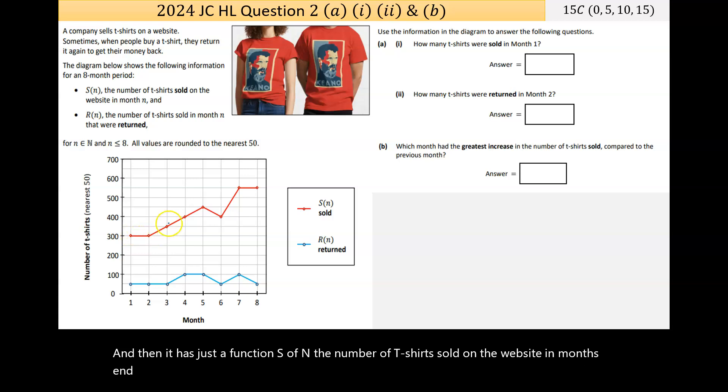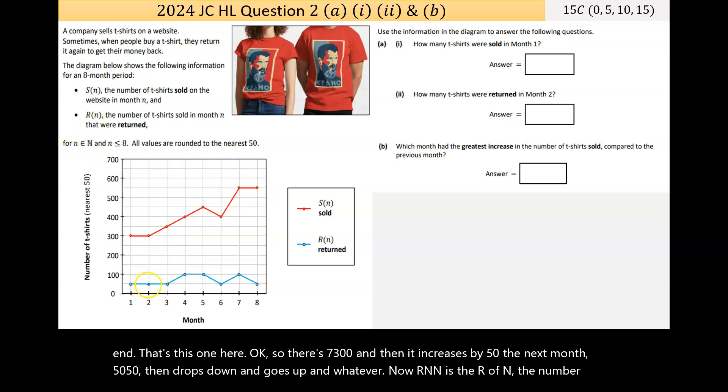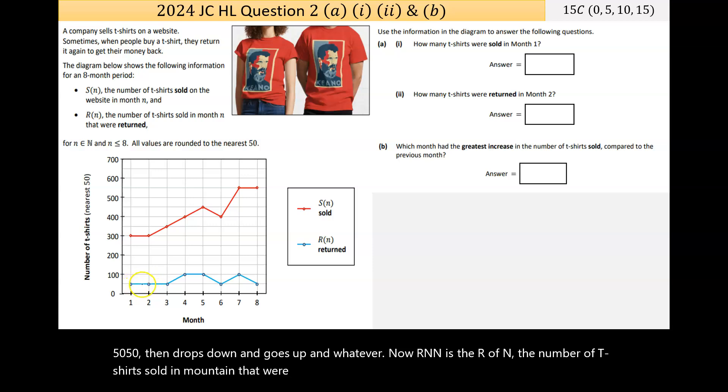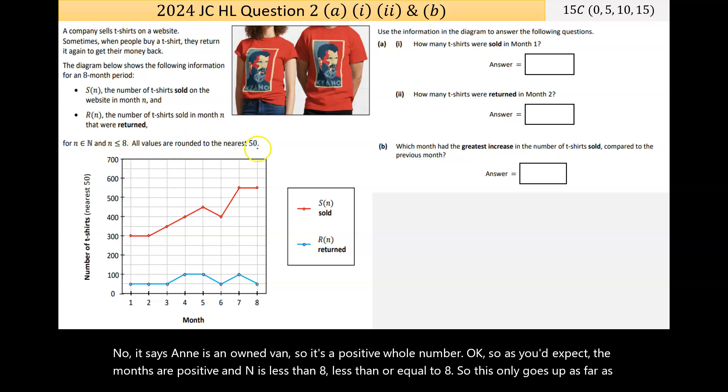There's 300 and then it increases by 50 the next month, then drops down and goes up and whatever. R(n) is the number of t-shirts sold in month n that were returned. So you see 50 returned, 50 returned, so if they sold 350 and 50 returned, there's a difference of 250 there. N is an element of the natural numbers, so it's a positive whole number. N is less than or equal to 8, so this only goes up as far as 8. All values are rounded to the nearest 50.